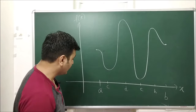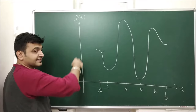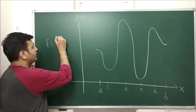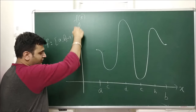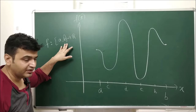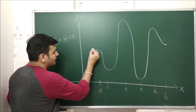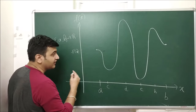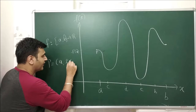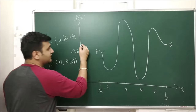Suppose this is the graph of some function. The endpoints are a and b, so the x-axis is the input and the y-axis is f of x. So f is a function whose domain is the closed interval [a, b] and outputs are real numbers. This a and b can be any real numbers with a less than b. I'll call the left endpoint P, so P is the point (a, f(a)), and the right endpoint Q is the point (b, f(b)).